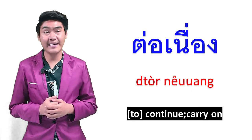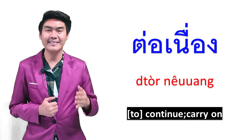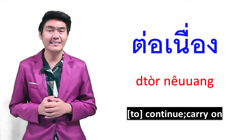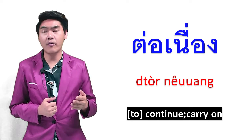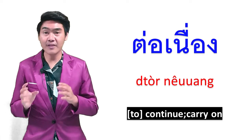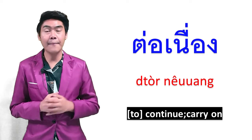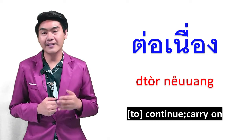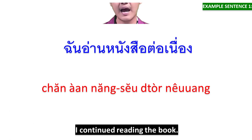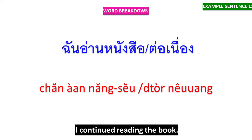The last word of today is ต่อเนื่อง. เนื่อง means 'because' or 'cause,' but ต่อเนื่อง means 'carry on' or 'continue.' For example: ฉันอ่านหนังสือต่อเนื่อง — ฉันอ่านหนังสือ means 'I am reading the book,' and ต่อเนื่อง means 'continued.'